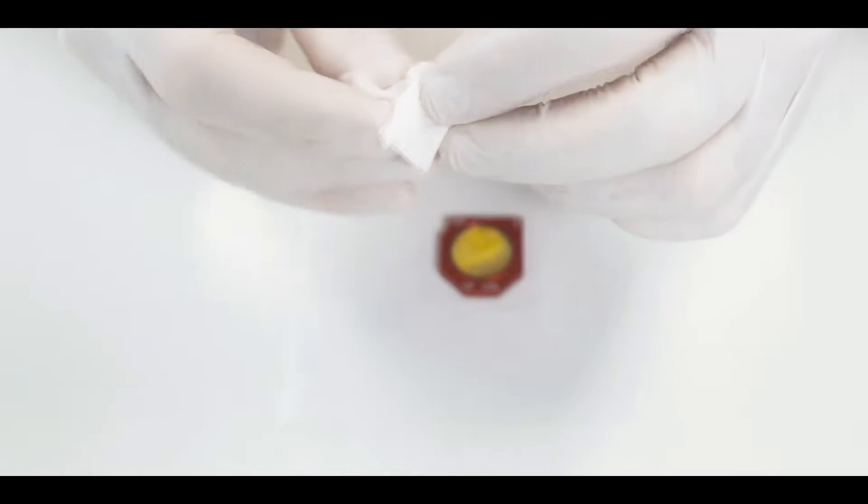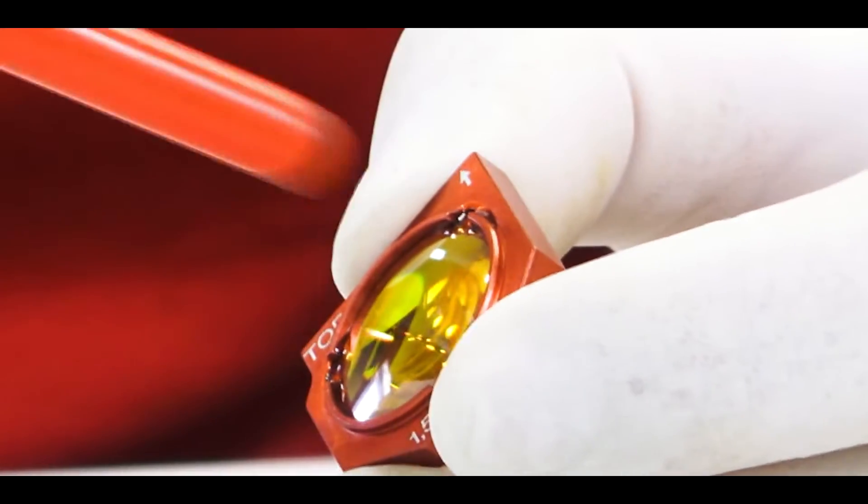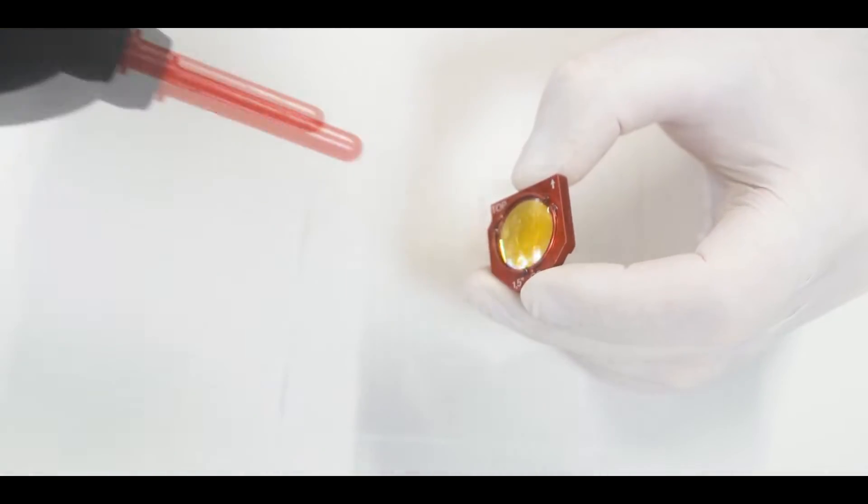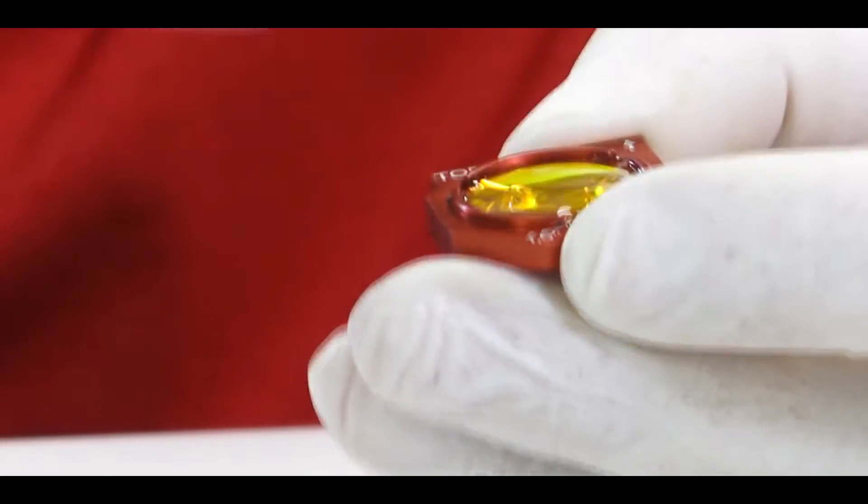First step is to take the lens tissue and fold it several times. Then use the air blower to disperse any dust particles on the lens. Apply one to two drops of the lens cleaner onto the optic.